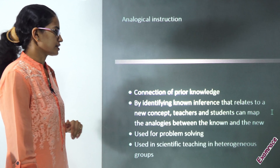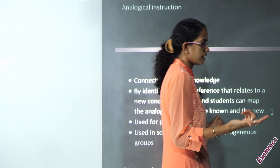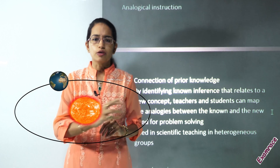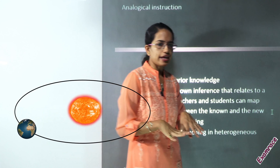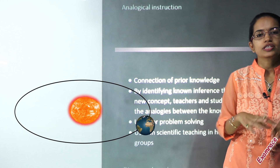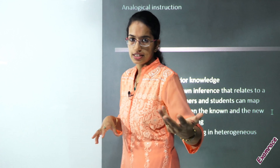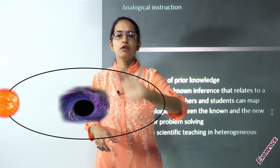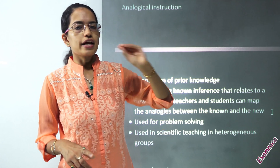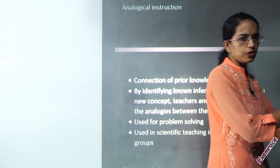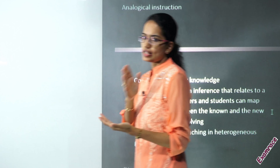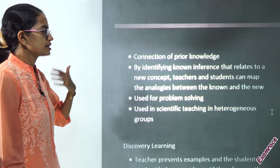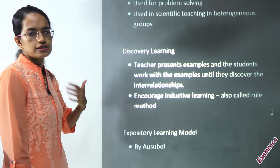The next is analogical instruction. Analogical instruction occurs with prior knowledge. For example, I tell the student that earth revolves around the sun — that's the prior knowledge. Based on that, we add new knowledge, such as the sun moves around the black hole. So you enhance knowledge based on prior knowledge on a similar pattern. This is the second strategy for teaching concepts and is mainly used for problem solving; it is more scientific in nature.